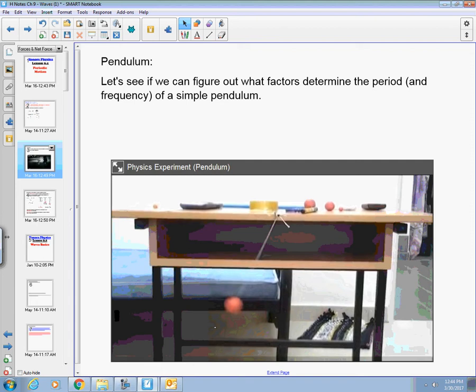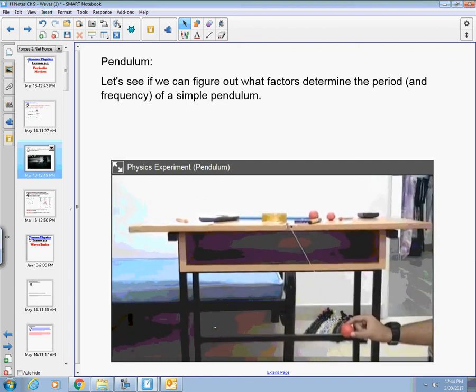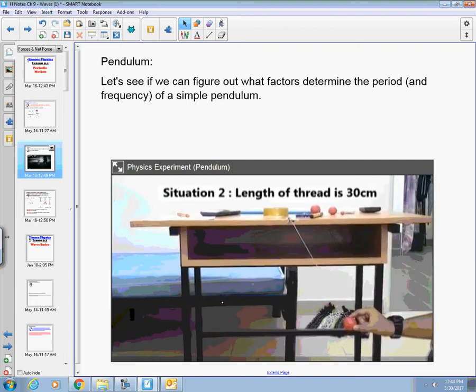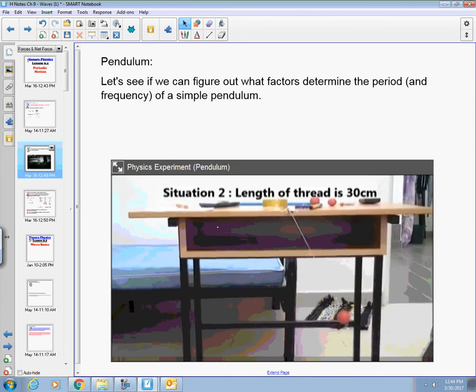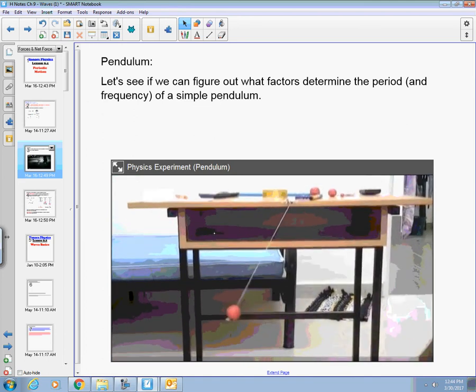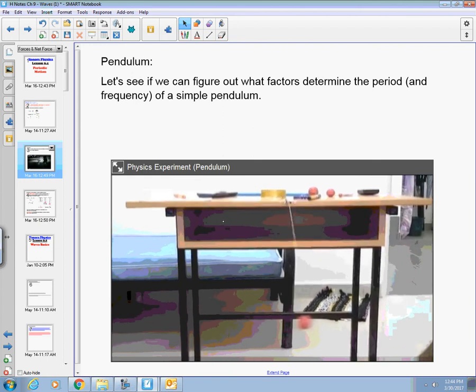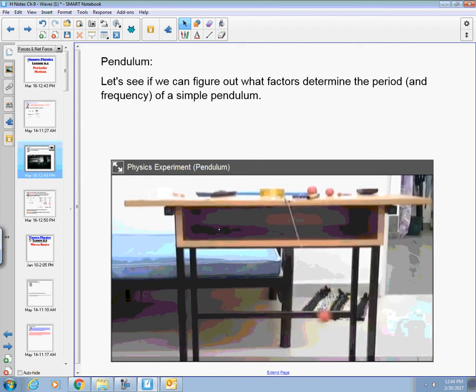So what we're going to do is we're going to change the length of this pendulum and see how that affects our period. So now we're increasing it to 30 centimeters. Just by looking at it without even timing, you can see that there is a change in the period.